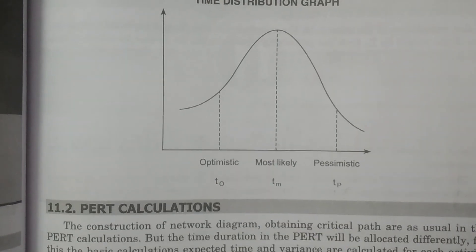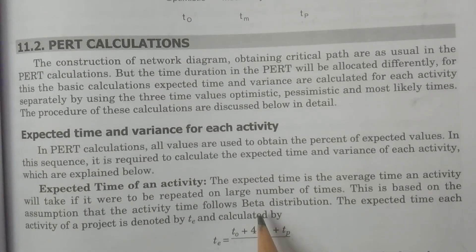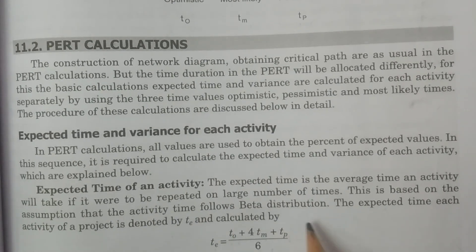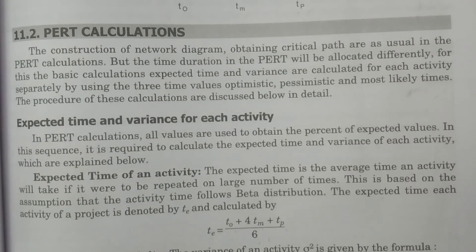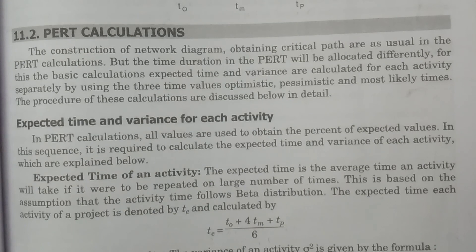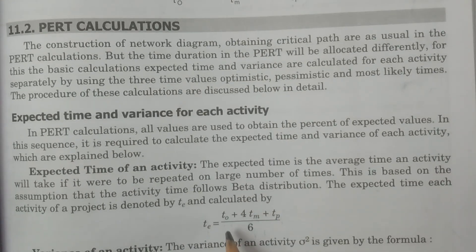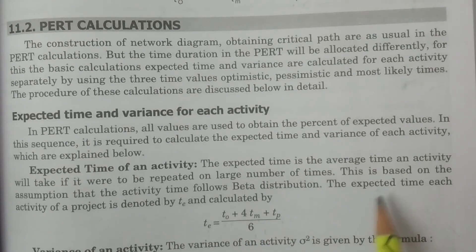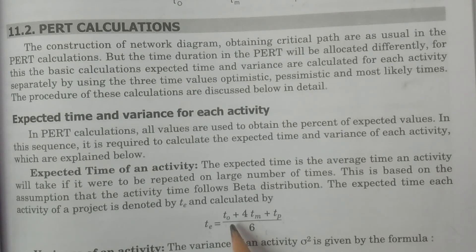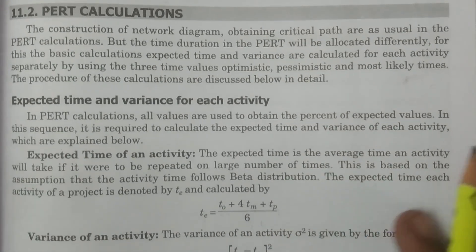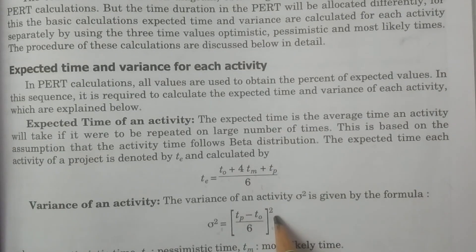Now, the calculations of PERT are straightforward. The activity time follows the beta distribution. Using the three time periods T-naught, Tm, and Tp with the beta distribution, the expected time of each activity is denoted by Te and calculated as: Te = (T-naught + 4Tm + Tp) / 6. The variance of an activity is calculated by the formula: σ² = ((Tp − T-naught) / 6)².